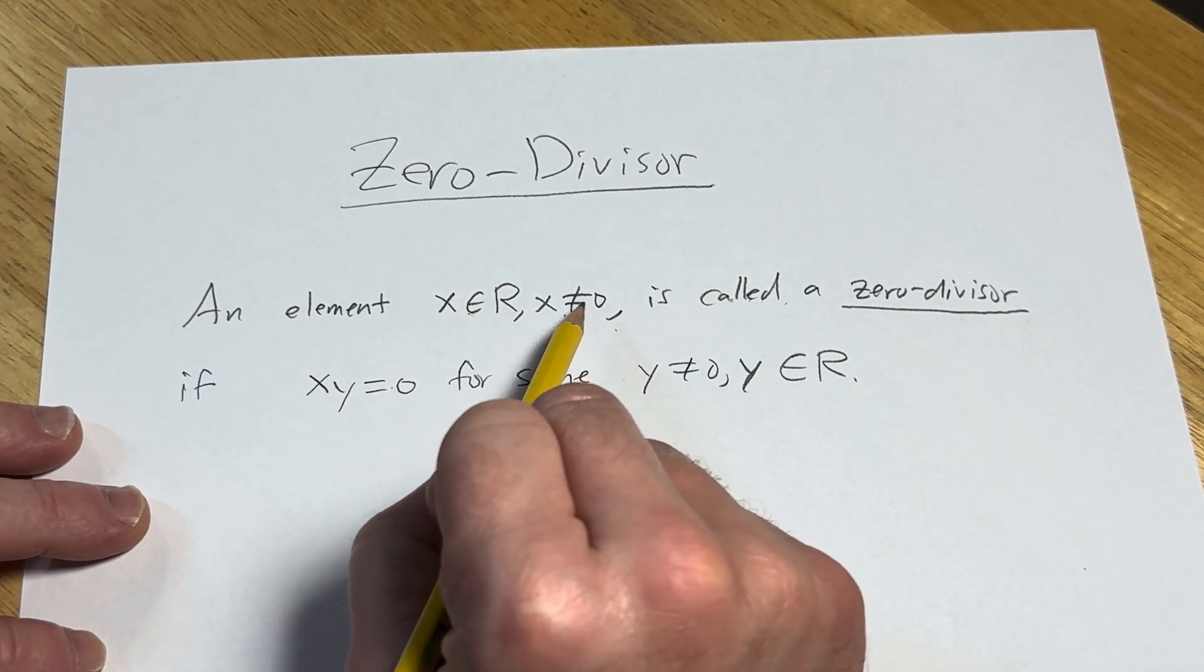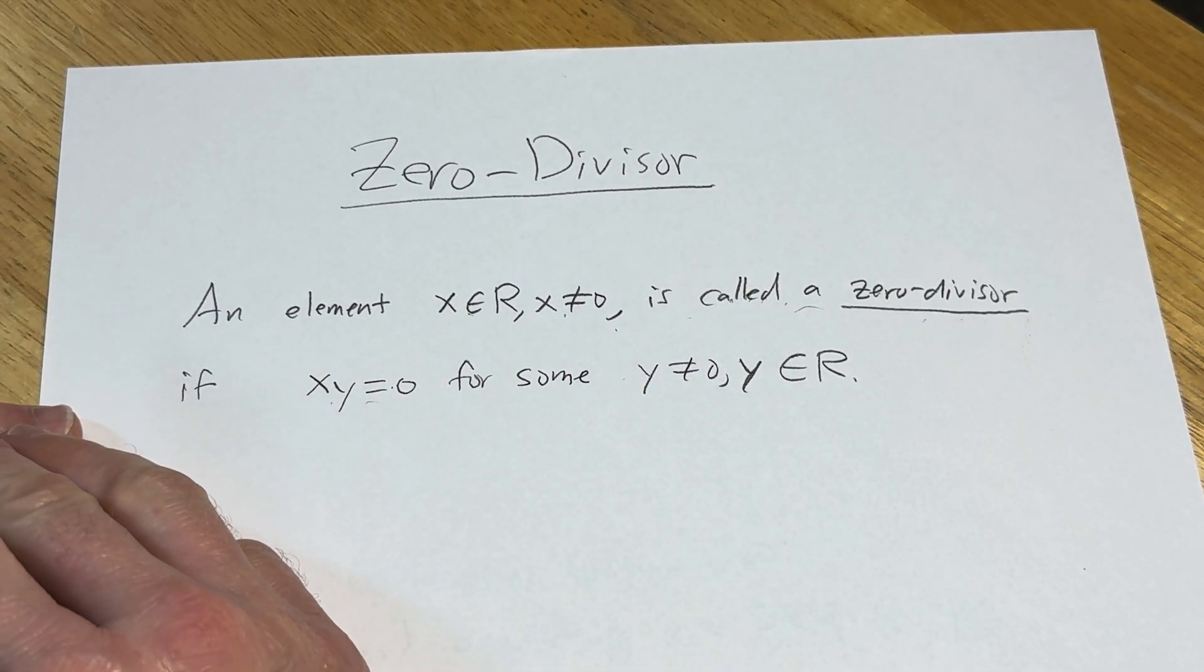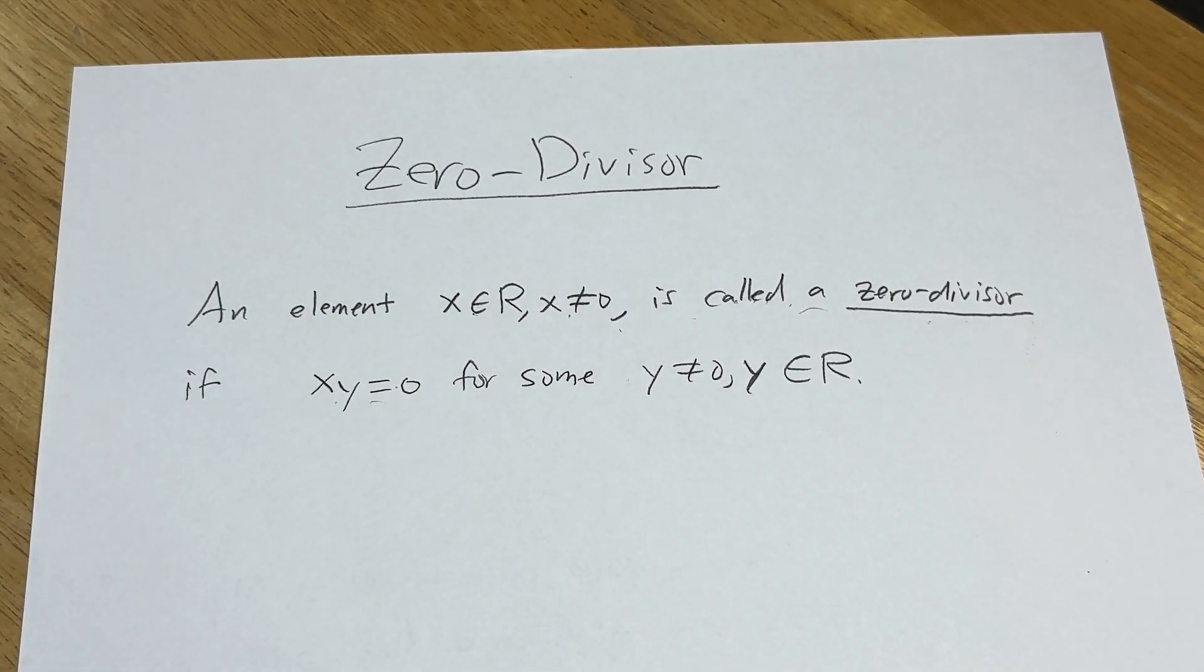So x in R, x not equal to zero, is called a zero divisor if x times y equals zero for some y not equal to zero. So that's the definition of a zero divisor. Take care.